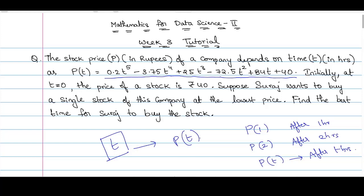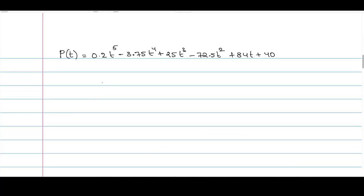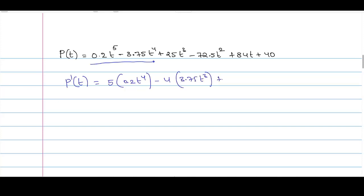Let us find the critical points of P(t) first. We compute P'(t) by differentiating with respect to t and equate it to 0 to get the critical points. P'(t) = 5×0.2t⁴ − 4×3.75t³ + 3×25t² − 2×72.5t + 84.